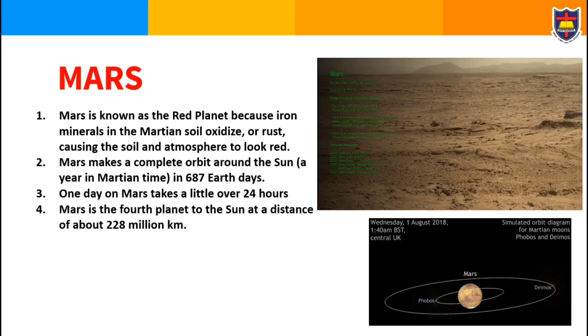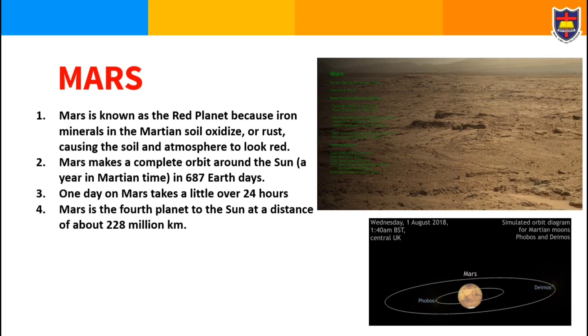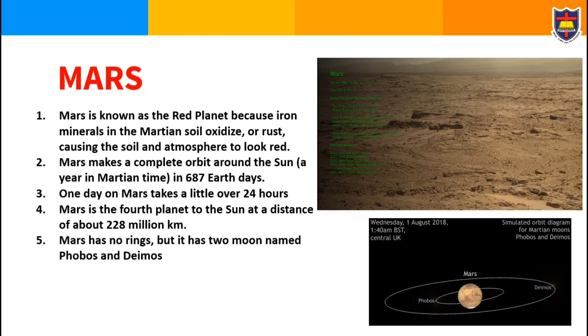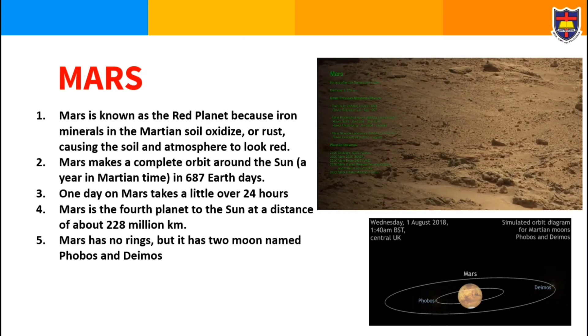Mars is the fourth planet to the Sun at a distance of about 228 million kilometers. Mars has no rings but it has two moons named Phobos and Deimos.